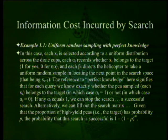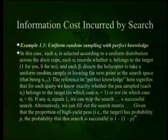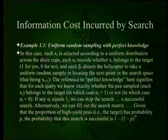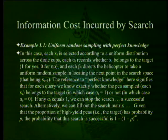If any a_i equals 1, we can stop the search — we found a pea, we're done. Given that the probability of high-yield peas — the target — has probability p, the probability that the search is successful is 1 minus (1 minus p) to the m. That 1 minus p to the m form means that if m and p are sufficiently large, it starts to look like an exponential function, inviting success of a logarithmic type.